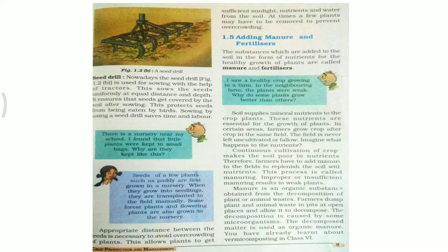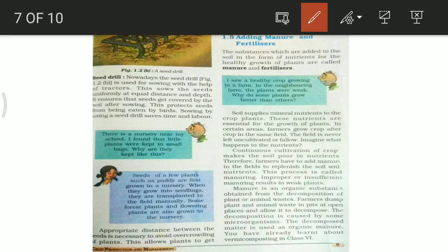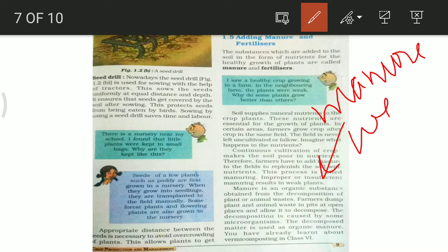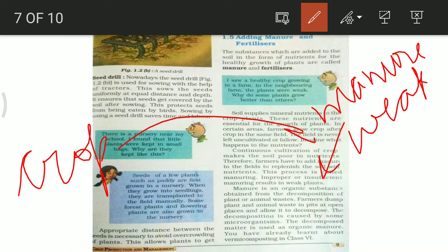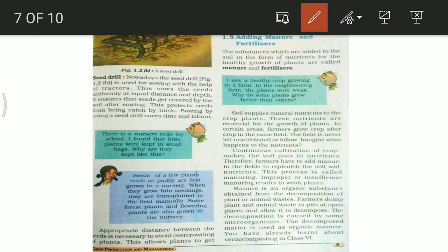We need to know that improper and insufficient manuring will result in weak crops. If we don't add manure properly, then the crop will be weak. Manure is an organic substance obtained from the decomposition of plants and animal waste.